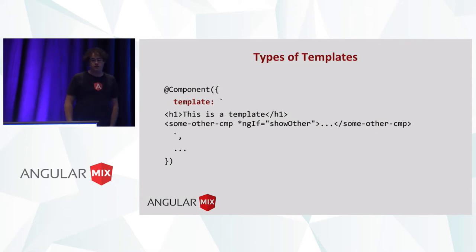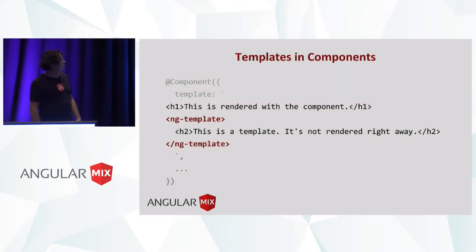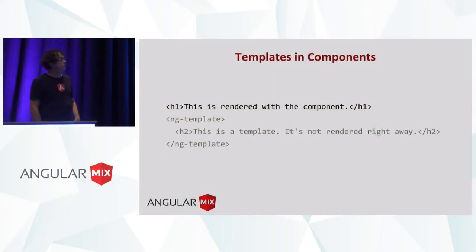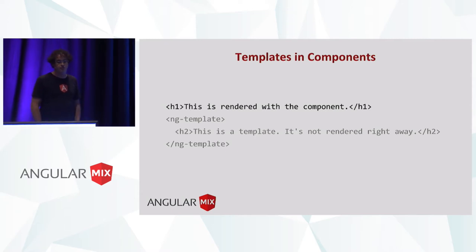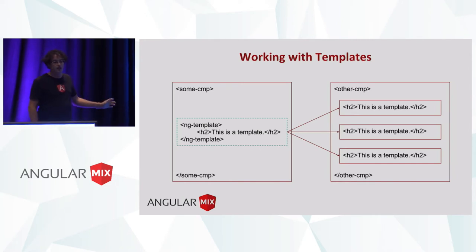But there's a second kind of template in Angular: the ng-template. You can actually embed these in your component template and use them to do more advanced things. Here's that same component — we have an H1 that we're going to render at runtime, and we have an H2 inside an ng-template. When we actually render this component, that H2 is nowhere to be found. Angular is keeping it on the side, and we can tell it when and where we want to render that content — and that doesn't even have to be in the same component that declares the template.